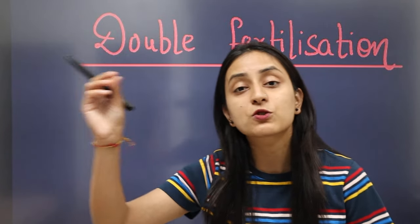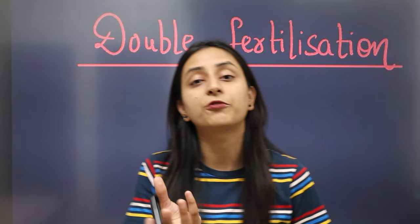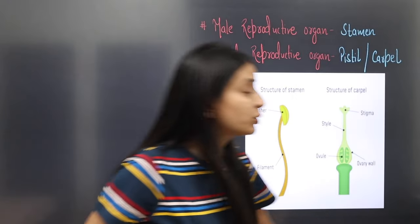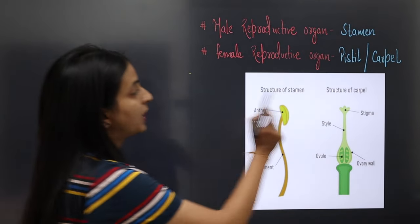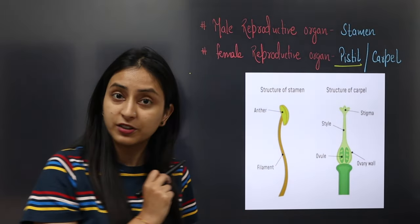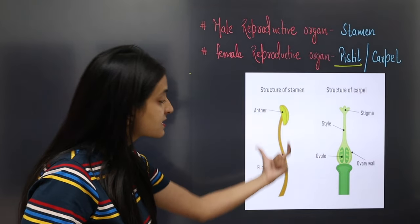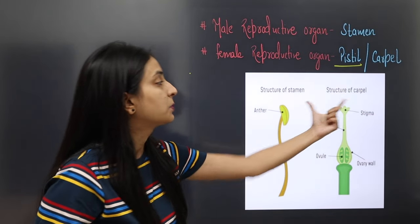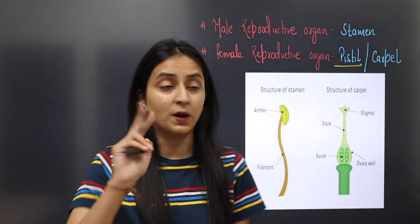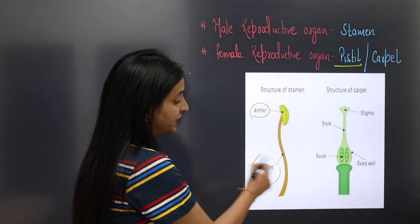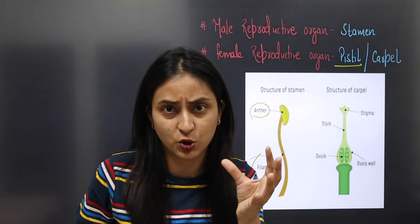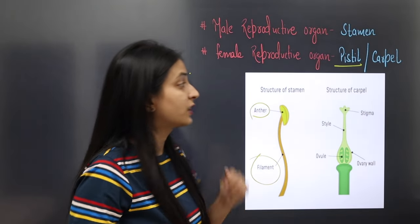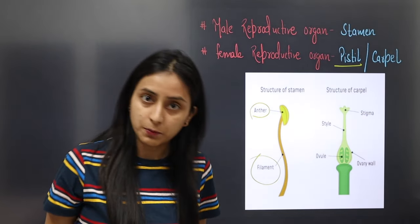In an angiospermic plant, the reproductive part is the flower. In the flower, the male reproductive part is called stamen, and the female reproductive part is called pistil or carpel. There are two parts of the stamen: anther and filament. The anther contains pollen grains. The female part of the flower is the carpel or pistil.